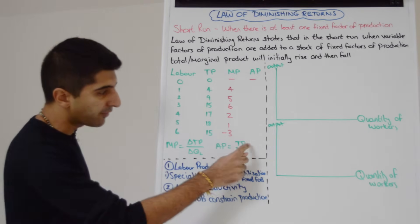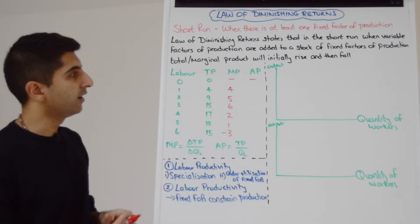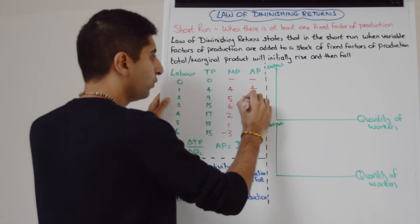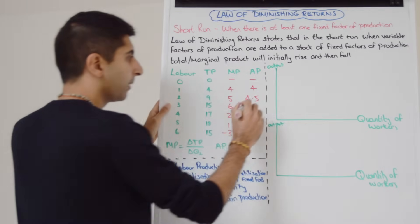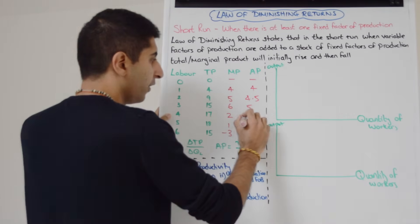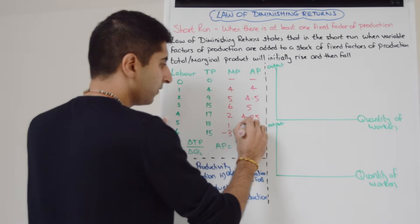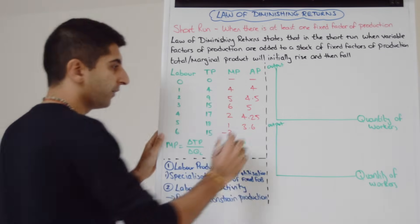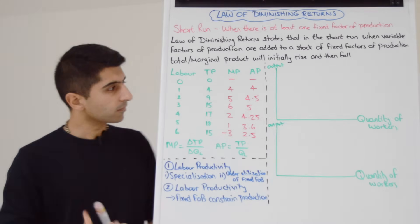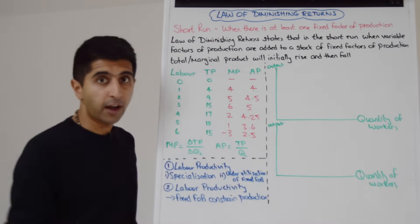What about average product? Average product is just total product divided by the quantity of workers. So four divided by one is four; nine divided by two is 4.5; fifteen divided by three is five; seventeen divided by four is 4.25; eighteen divided by five is 3.6; fifteen divided by six is 2.5. So those are the numbers. What we can now do is put those numbers onto diagrams.